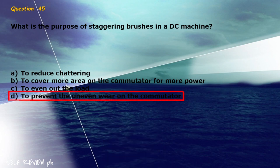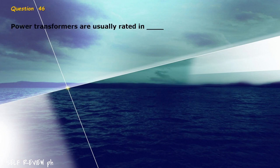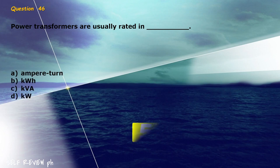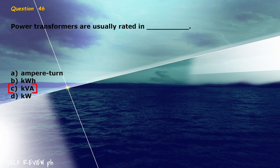Question 46: Power transformers are usually rated in blank. A) ampere turn, B) kilowatt hour, C) kVA, D) kilowatt. The correct answer is letter C, kVA.